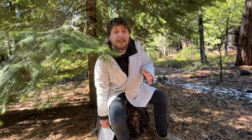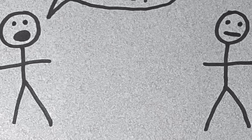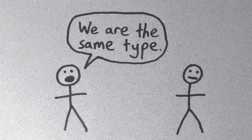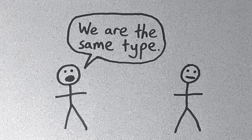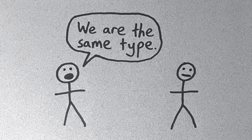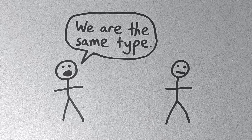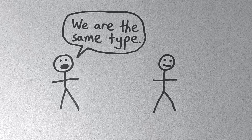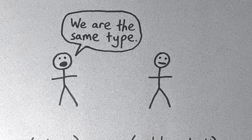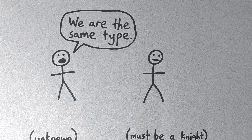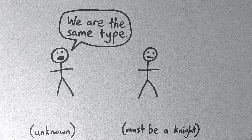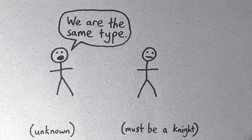For example, let's say there were two inhabitants, and one of them said, 'we are the same type,' meaning they were either both knights or both knaves. If they were a knight, that would be true and the other person would also be a knight. If they were a knave, it would be false, meaning they were different types, and the other person would be a knight again. So we can solve this puzzle by saying we don't know what type the speaker is, but we know the other person must be a knight.